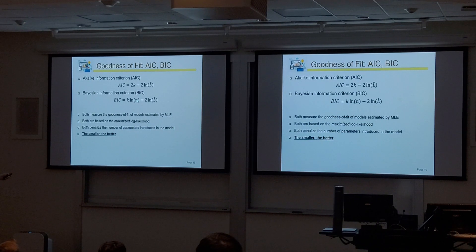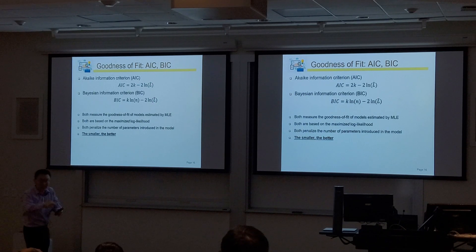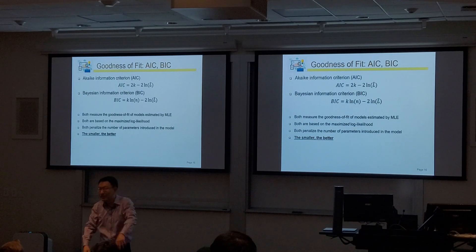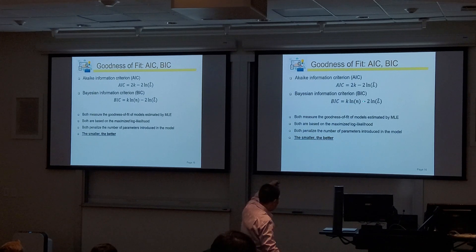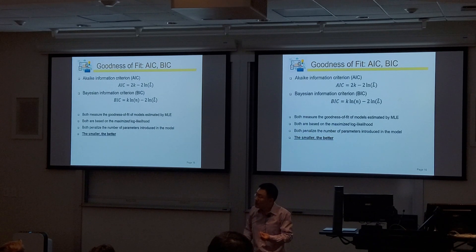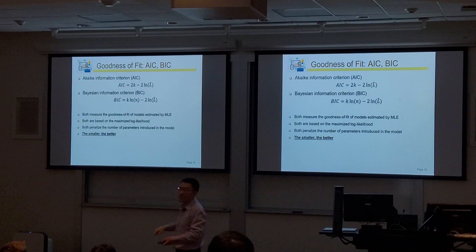AIC and BIC are always positive because log-likelihood is negative. The core is negative 2 times the maximized log-likelihood, so smaller values are better. In addition to the likelihood term, there are penalty terms based on k — the number of x variables. These penalties discourage overfitting: a model with more x variables must improve the log-likelihood substantially to win. AIC penalizes less; BIC penalizes by log(n), making it stricter.